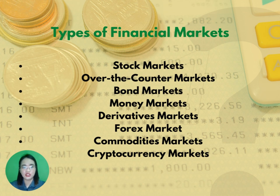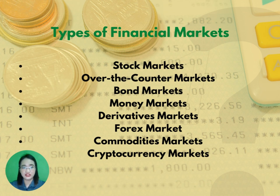A derivative is a contract between two or more parties whose value is based on an agreed-upon underlying financial asset, like a security, or set of assets, like an index. Derivatives are secondary securities whose value is solely derived from the value of the primary security they are linked to; in and of itself, a derivative is worthless. A derivative market trades in futures and options contracts and advanced financial products that derive their value from underlying instruments like bonds, commodities, currencies, interest rates, market indices, and stocks.